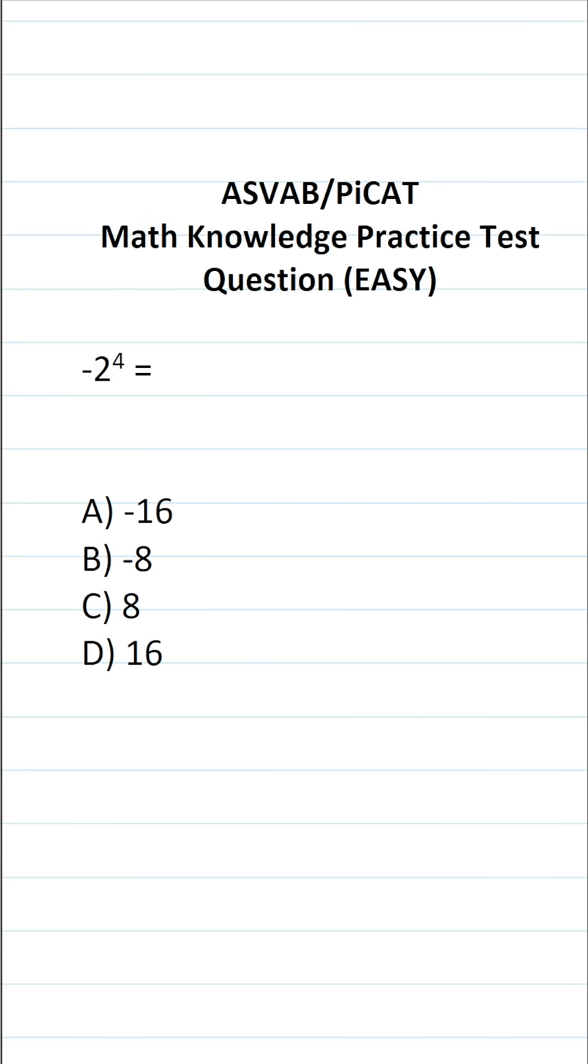This math knowledge practice test question for the ASVAB and PiCAT says negative 2 to the fourth power equals. On the ASVAB and PiCAT you're not given a reference sheet or a calculator, so you have to be able to solve all these questions by hand.